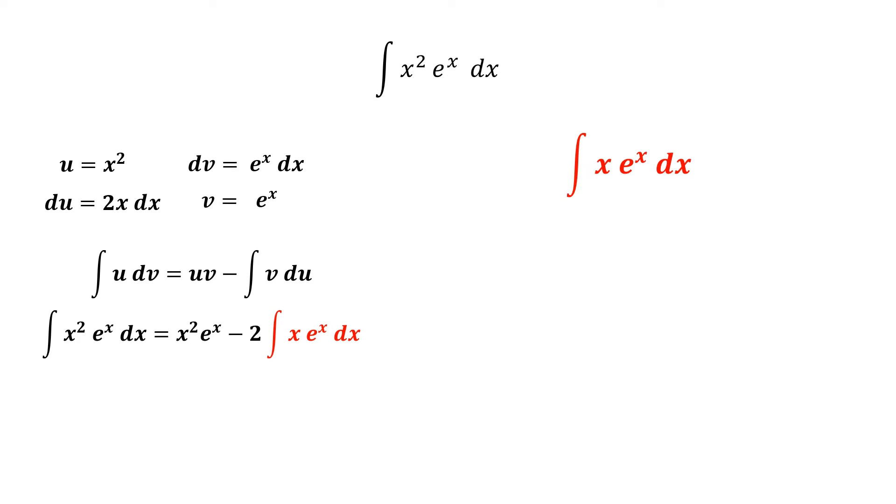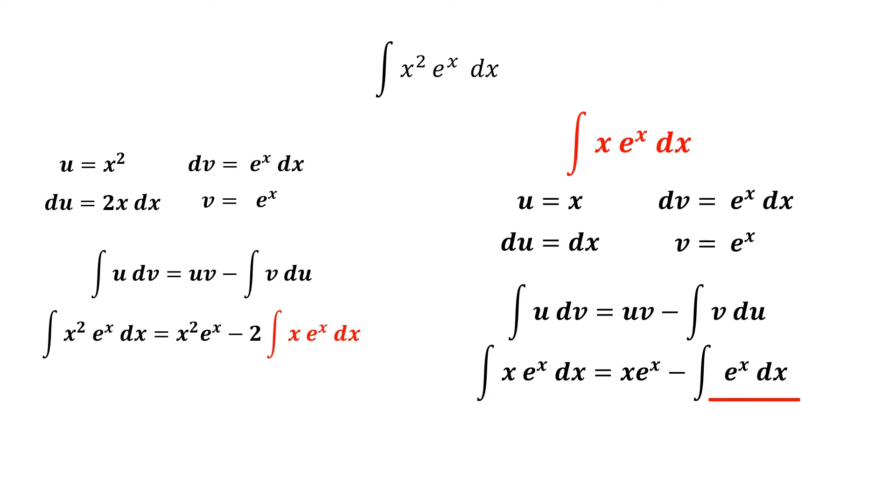For this integral, notice that we have a product of an algebra and an exponent, so we have to use integration by parts one more time. Same thing here, we first determine our u and dv. Take the derivative of u in terms of dx, and integrating e to the x, we still get e to the x. Plug in the terms into the formula and we find the integral of this.